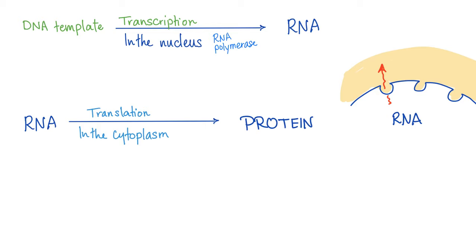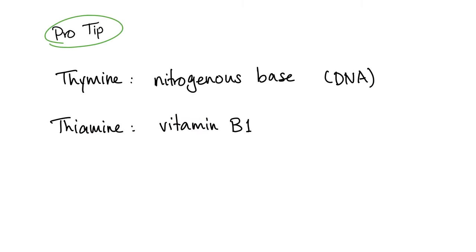When you convert DNA to RNA, this is called transcription. When you convert RNA to protein, this is called translation — from meaningless codons to meaningful amino acids. Please don't get confused: do not confuse thymine, which is a nitrogenous base, with thiamine, which is vitamin B1. One has nothing to do with the other.